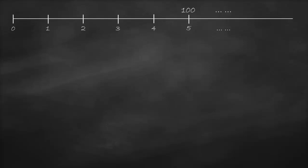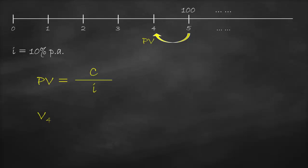We'd like to know the value in year zero. To get it, we need two steps. This is an ordinary perpetuity because we receive the same amount every year forever. The present value of an ordinary perpetuity falls one period before the first cash flow. My first cash flow happens in year five, so the present value will be in year four. At an interest rate of 10% per annum, PV = C / i = 100 / 10% = 1,000. So the value in year four equals $1,000.